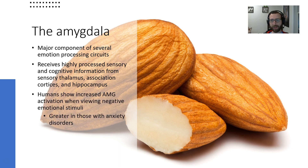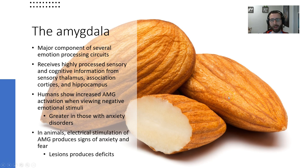Humans show increased activation of the amygdala when viewing negative emotional stimuli, and those with anxiety disorders show even greater activation. In animals, we know that electrical stimulation of the amygdala can produce anxiety and fear-like behaviors, and lesions of this region will produce deficits in that behavior.